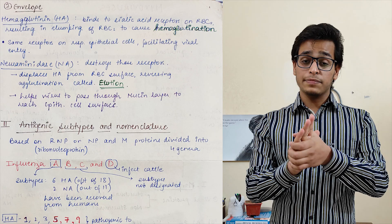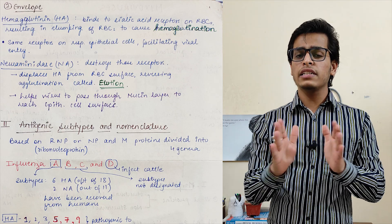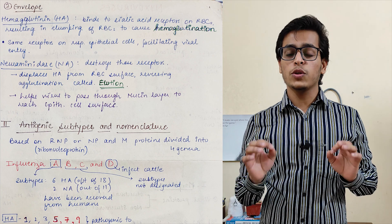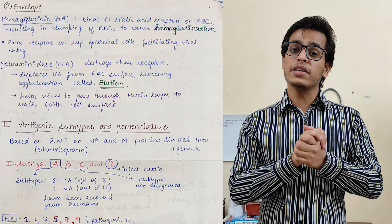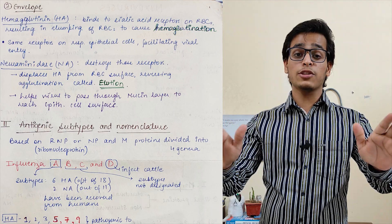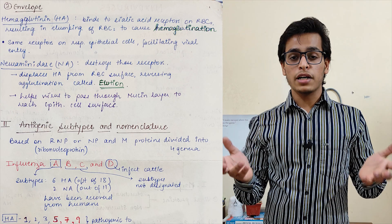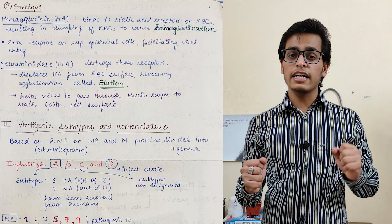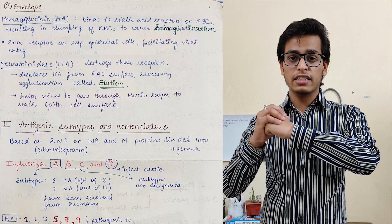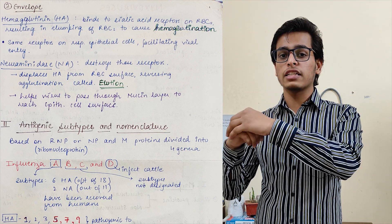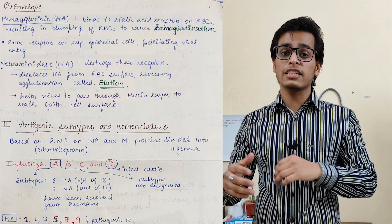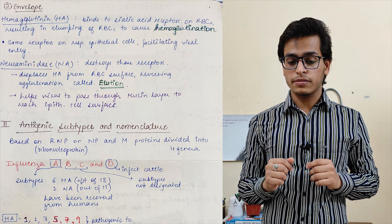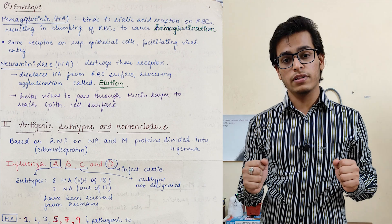The second envelope protein is Neuraminidase. Neuraminidase does exactly the opposite work from Hemagglutinin — it breaks the sialic acid receptor itself. So it frees Hemagglutinin: Hemagglutinin binds through the receptor, Neuraminidase breaks it. This helps in the smooth movement of the virus through the thick mucus we have in our respiratory membranes. So that is about the envelope.